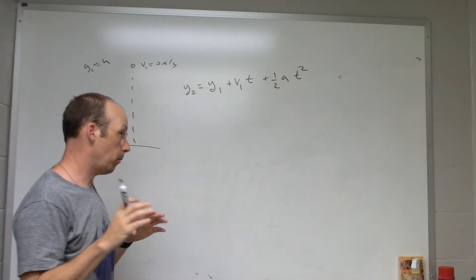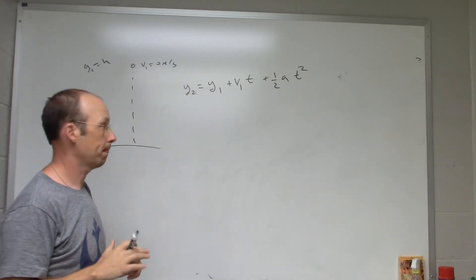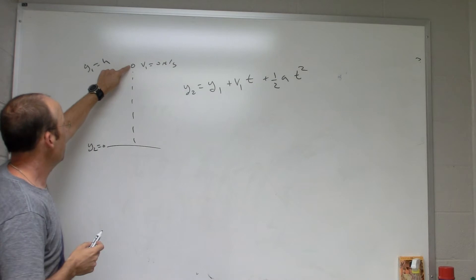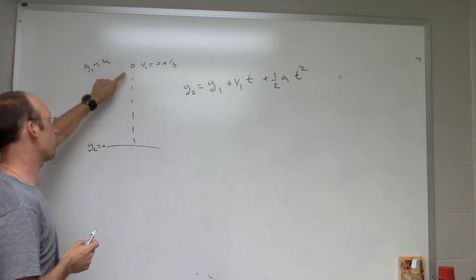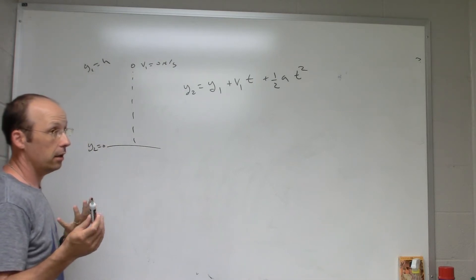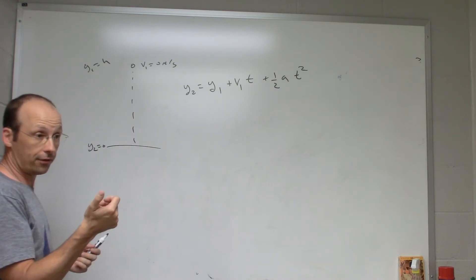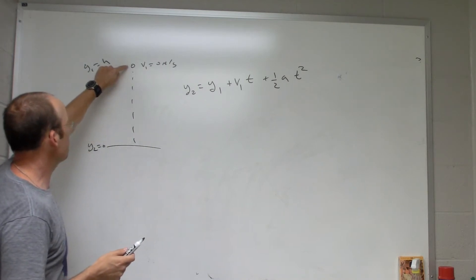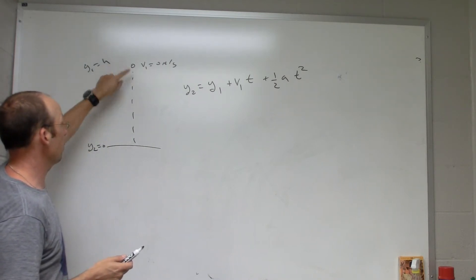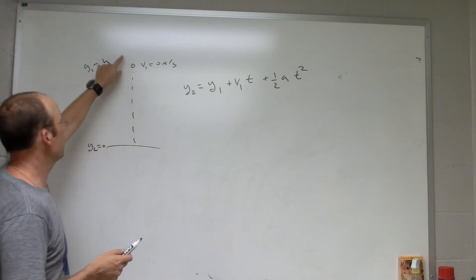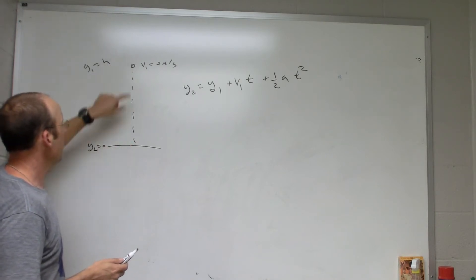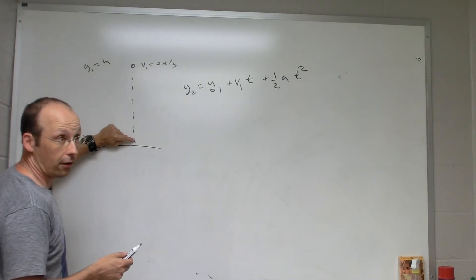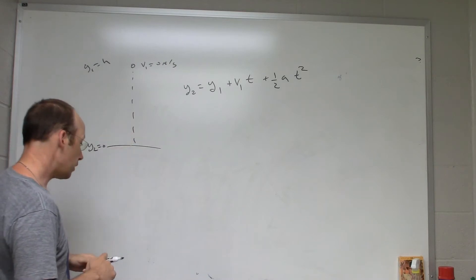We're going to use a drop timer. If you drop a ball and use a stopwatch, it takes under a second and the uncertainty in your starting and stopping is huge, so you don't get a very good value. This drop timer automatically starts when the ball leaves the top and automatically stops when it reaches the bottom. You need to measure the distance from the bottom of the ball to the top of the timer — that's how far it falls.